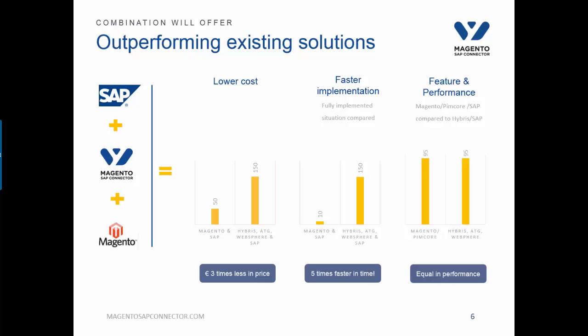So what did we actually try to achieve? First of all, we wanted to set up an enterprise level e-commerce platform with a lower cost compared to Hybris, HTG, or WebSphere. We wanted to implement the services faster because time to market is decreasing month by month. And we wanted to do all this with equal services.